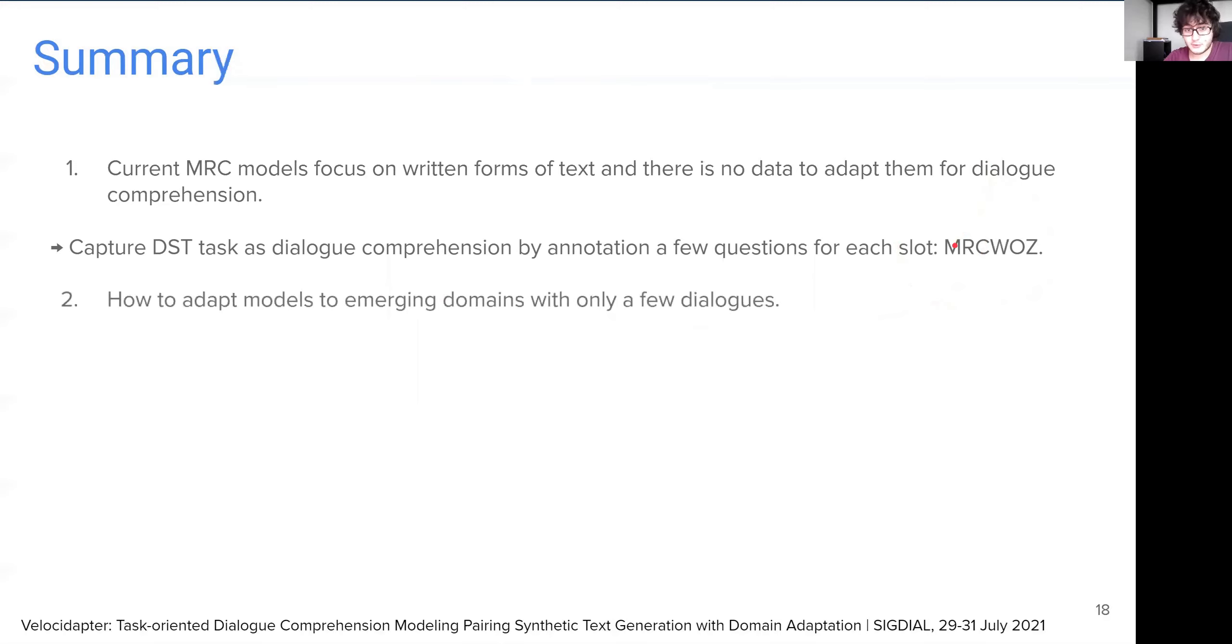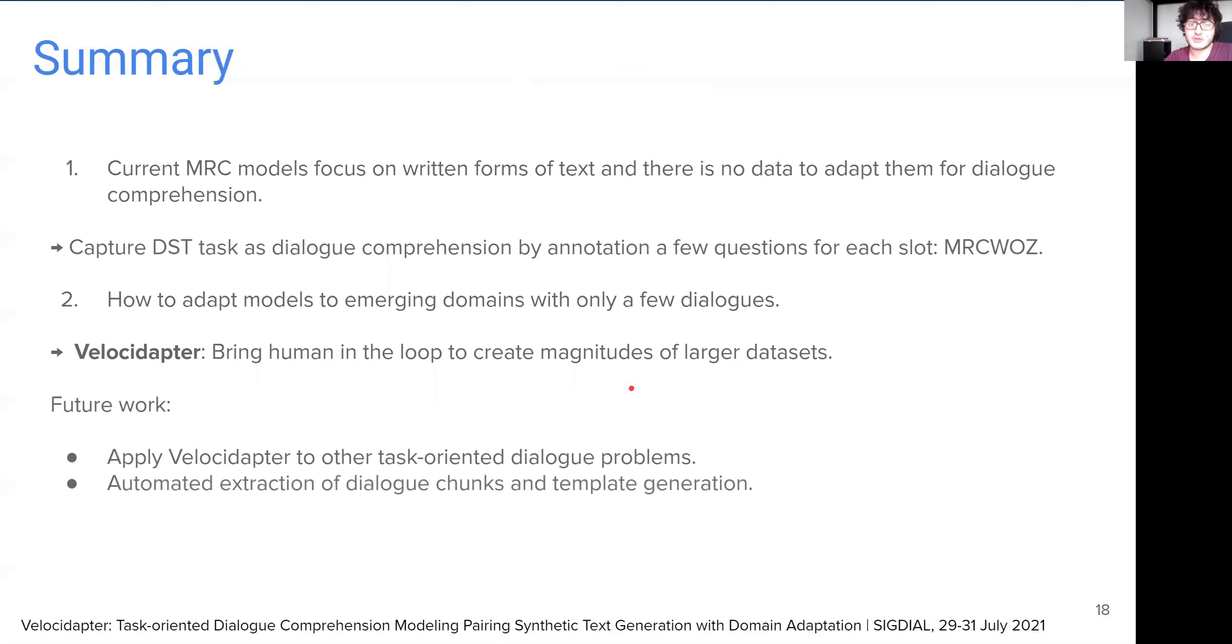In the second part of our work, we focus on how to adapt to emerging domains in task-oriented dialogue, which only have a few dialogues. For this, we introduce our framework, VelocAdapter, which brings humans in the loop to create datasets that are larger by magnitudes. In the future, we are keen to apply VelocAdapter to other task-oriented dialogue problems, and we also want to explore the automatic extraction of dialogue chunks. Thank you for your attention.